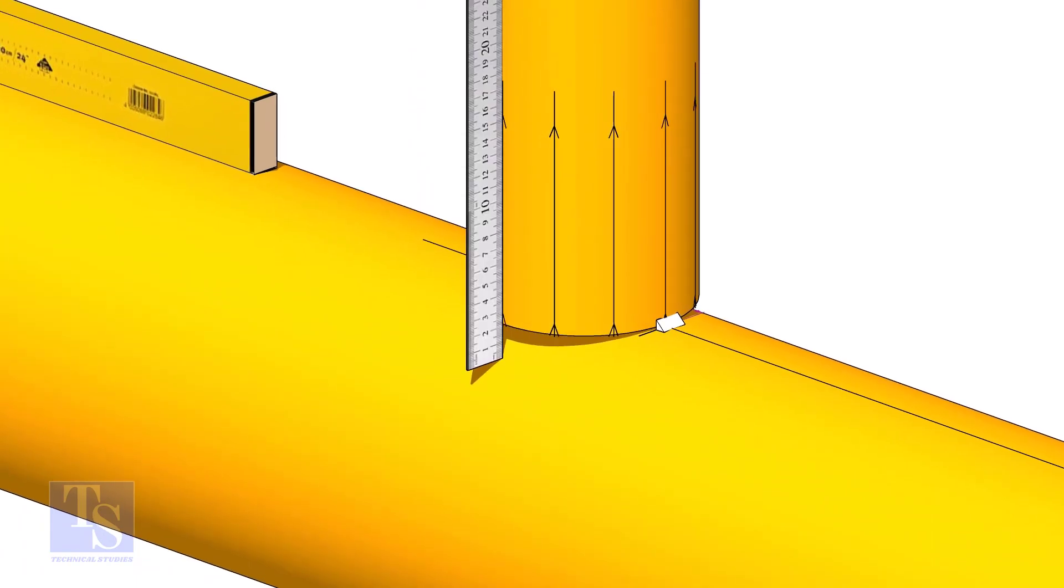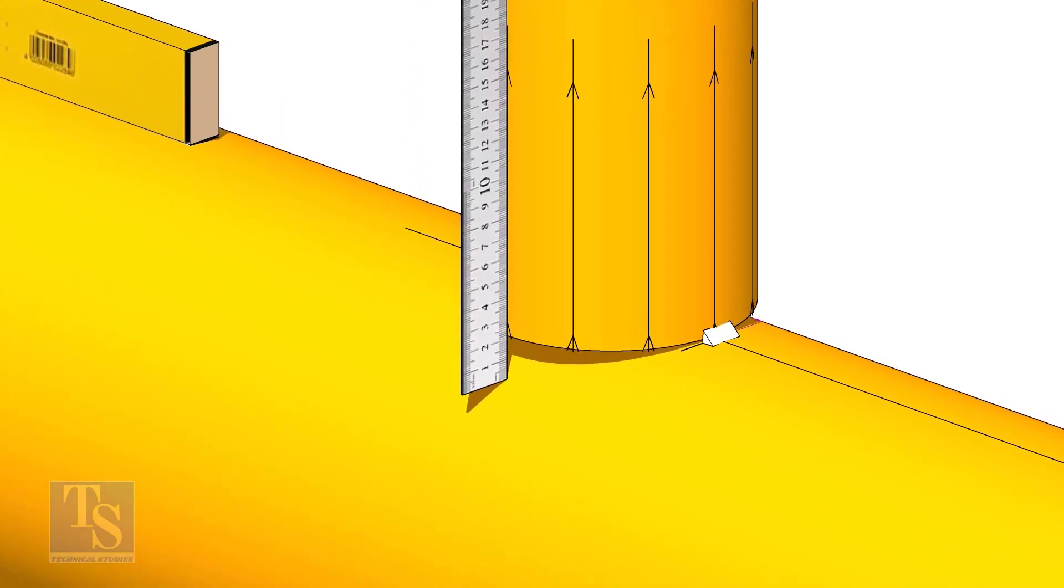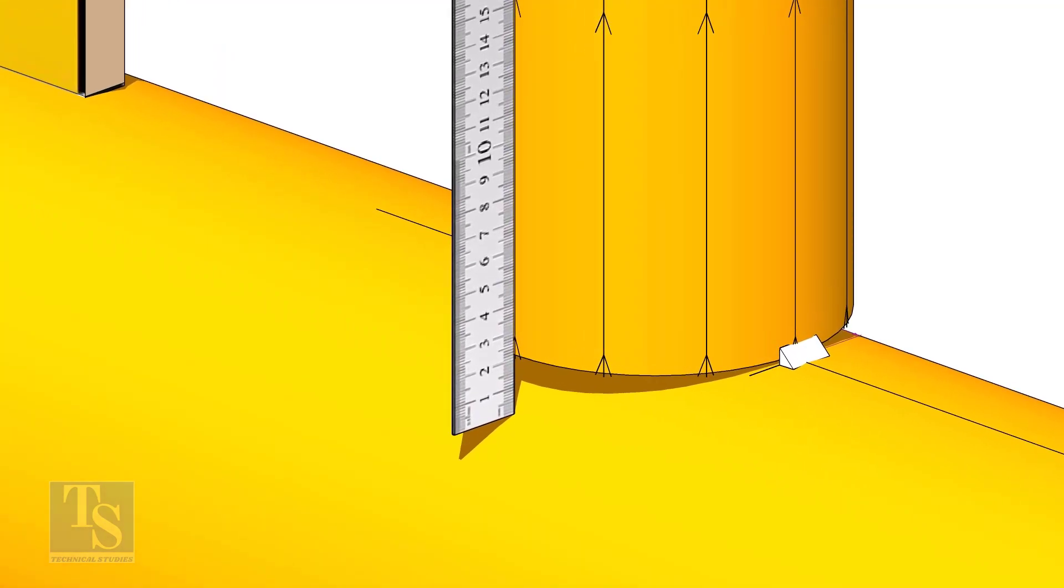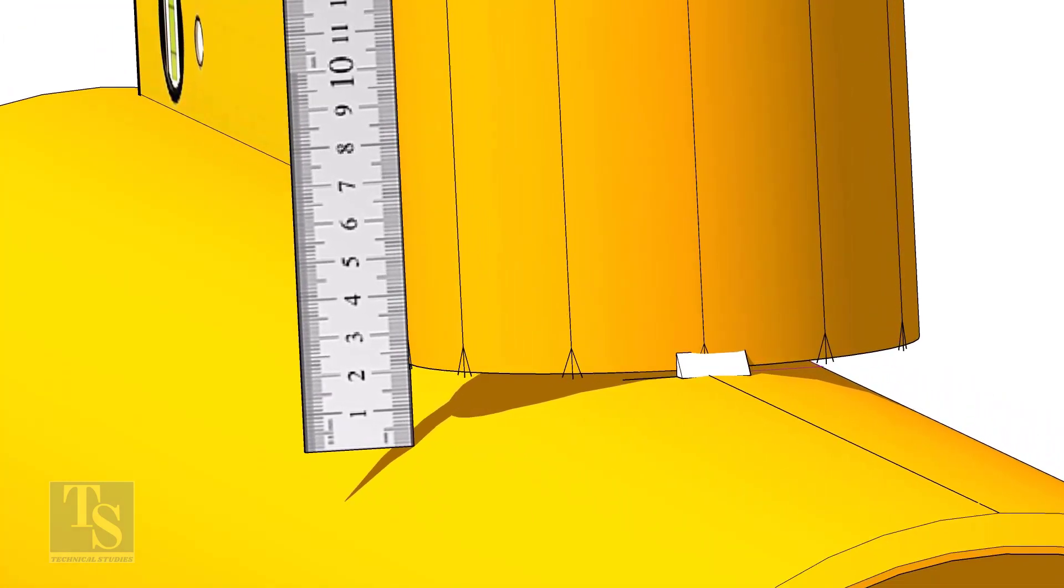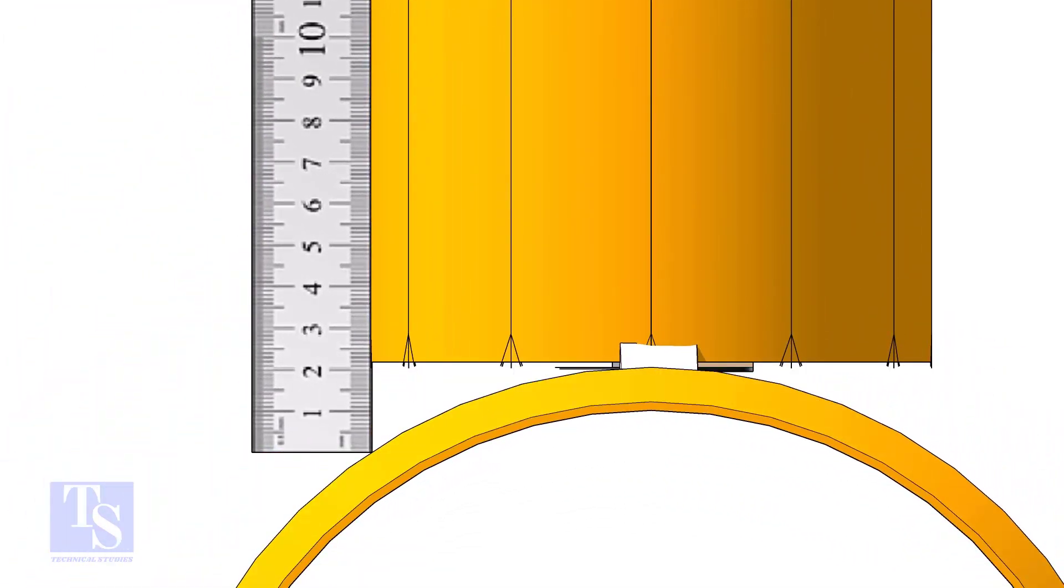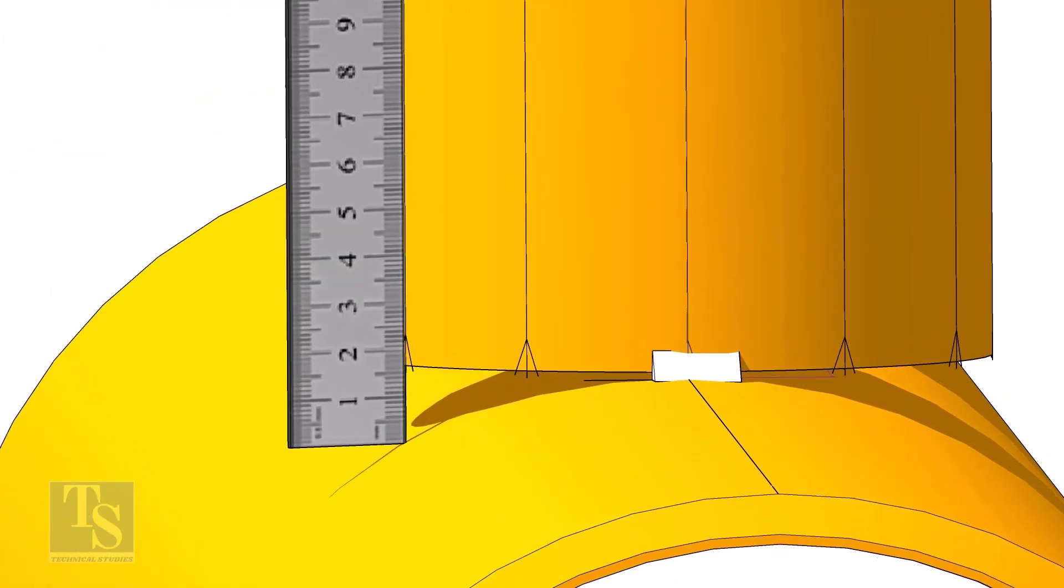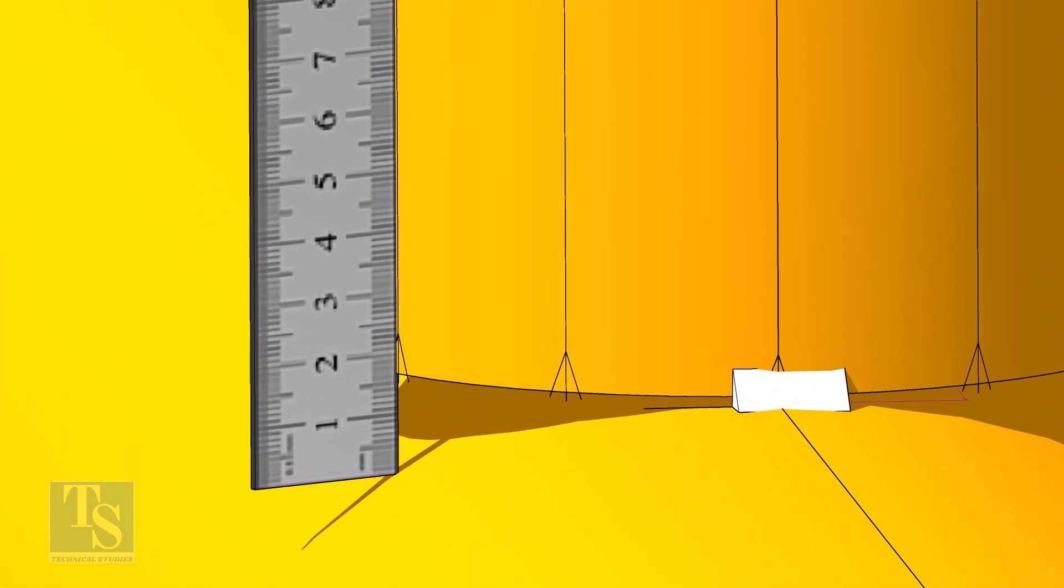Check the gap between the header and the branch as shown. When you measure, make sure the scale is vertical and is on the line on the branch pipe. Move the scale to the next vertical marking on the branch. Mark the distance on the branch from the header. In this case, it is 22 millimeters.